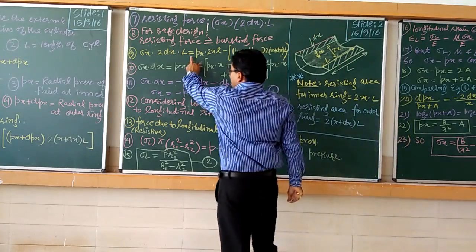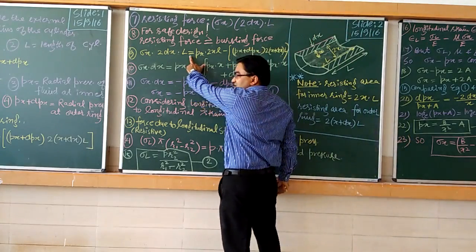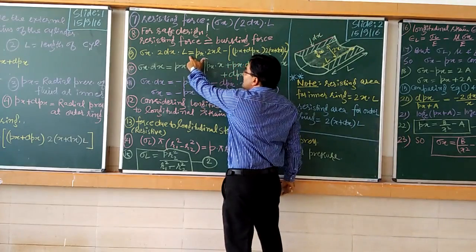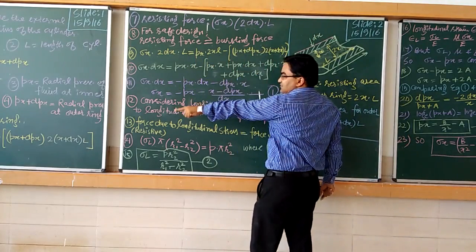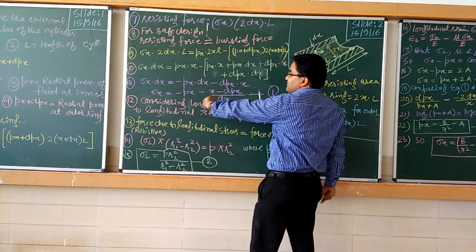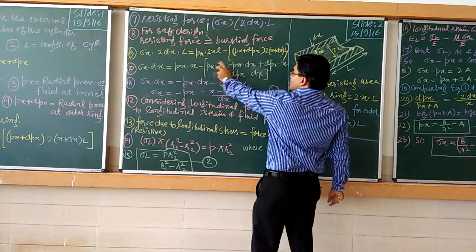After solving the equilibrium equation — setting the resistive force equal to the bursting force — we reach the final expression. Sigma_x is equal to minus Px minus x into dPx/dx.